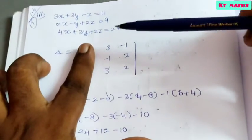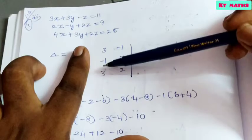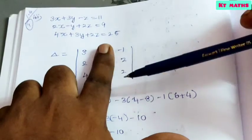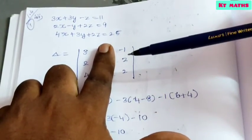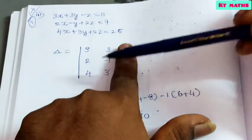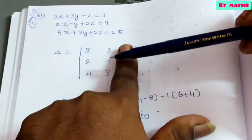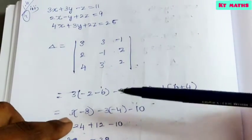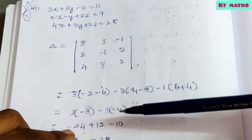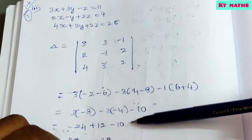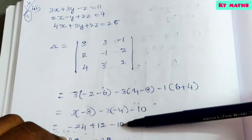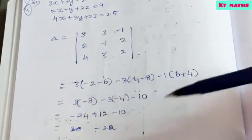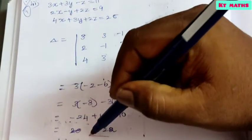Expanding: 3 into (−2 − 6) = 3 into −8, minus 3 into (4 − 8) = −3 into −4, minus 1 into (6 − (−4)). This gives 12 − 36, answer minus 22. So the delta value is −22.